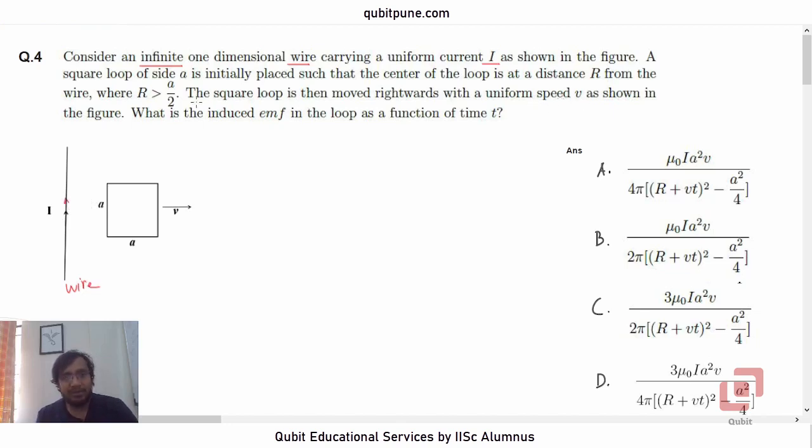A square loop of side A is initially placed such that the center of the loop is at a distance R from the wire, where R is greater than A by 2. That is obvious.